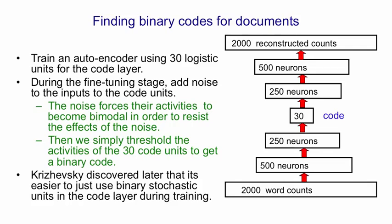Later on, Alex Krzyzewski discovered that we don't actually have to add Gaussian noise to the inputs to the 30 code units. Instead, we can just make them stochastic binary units. So during the forward pass, we stochastically pick a binary value using the output of the logistic. And then during the backward pass, we pretend that we've transmitted the real value probability from the logistic, and that gives us a smooth gradient for backpropagation.